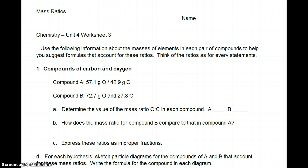For this mass ratio sheet, it says use the following information about the masses of elements in each pair of compounds to help you suggest formulas that account for these ratios. We've got one compound that is 57.1 grams of oxygen compared to 42.9 grams of carbon, and one compound that is 72.7 grams of oxygen compared to 27.3 grams of carbon.